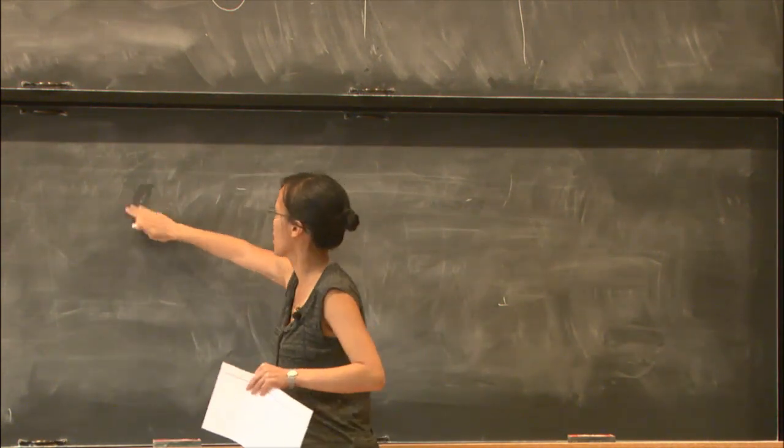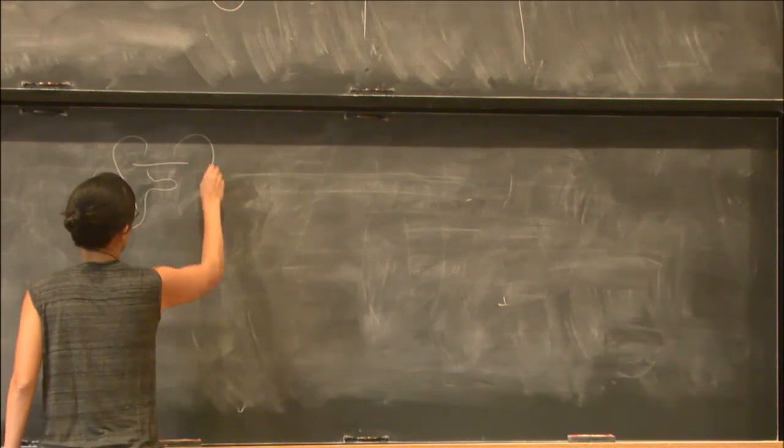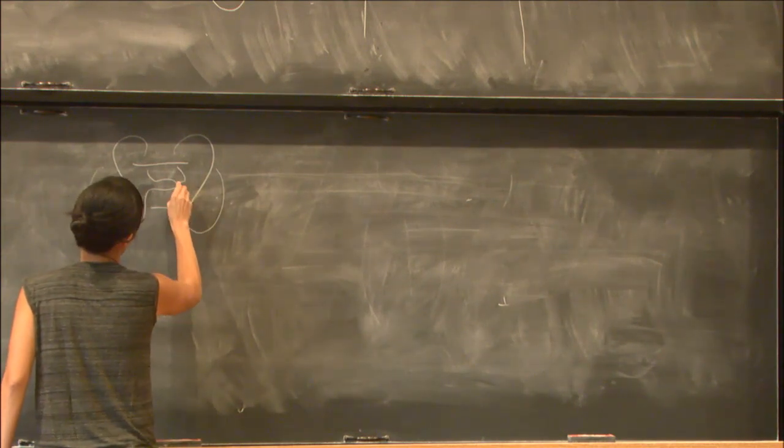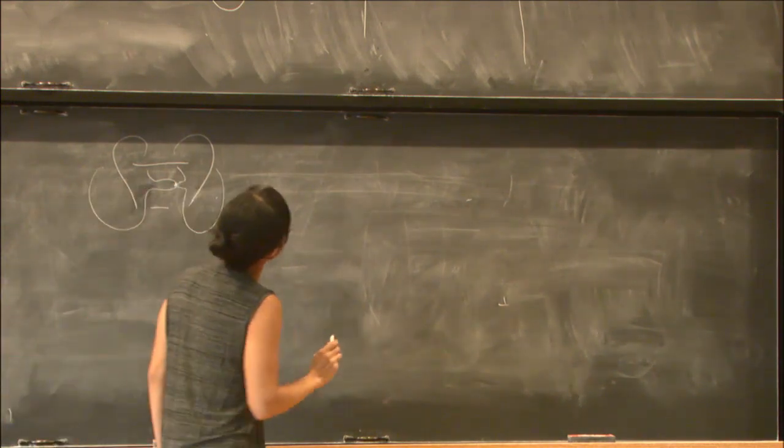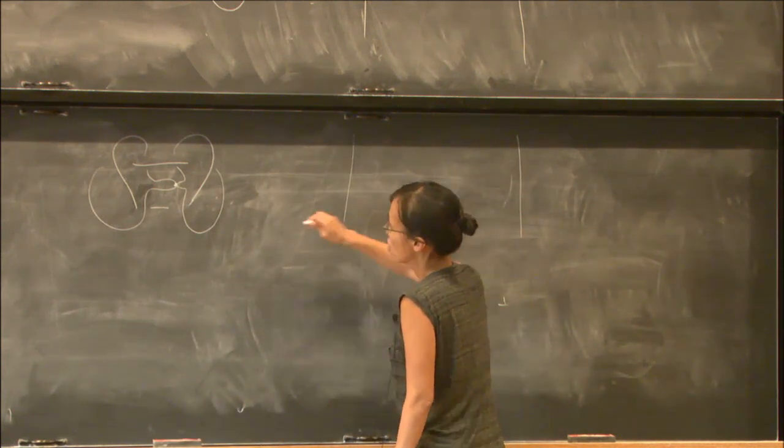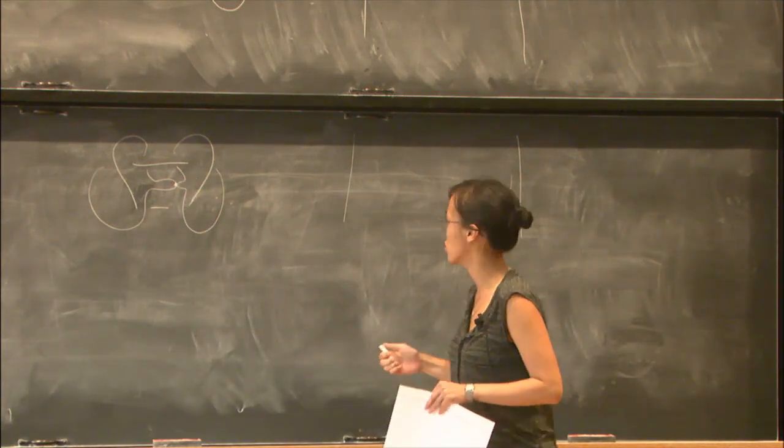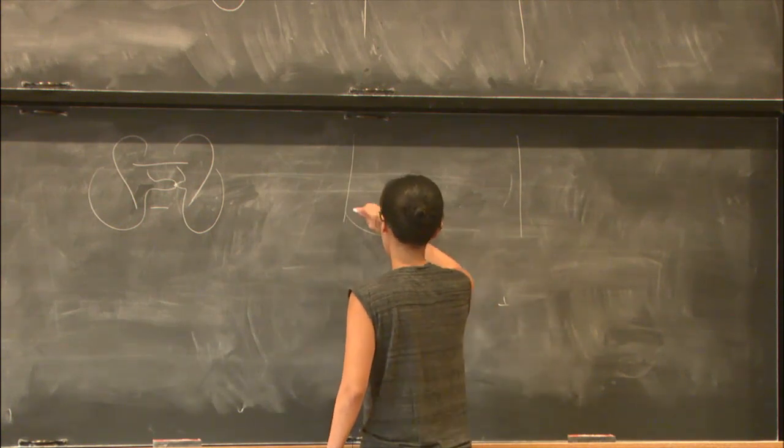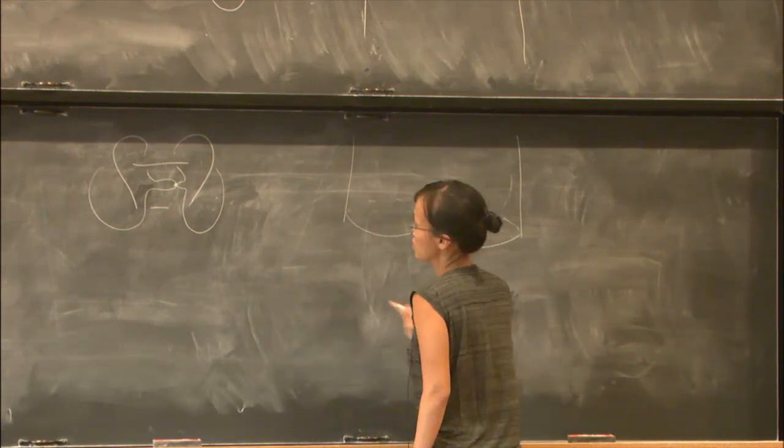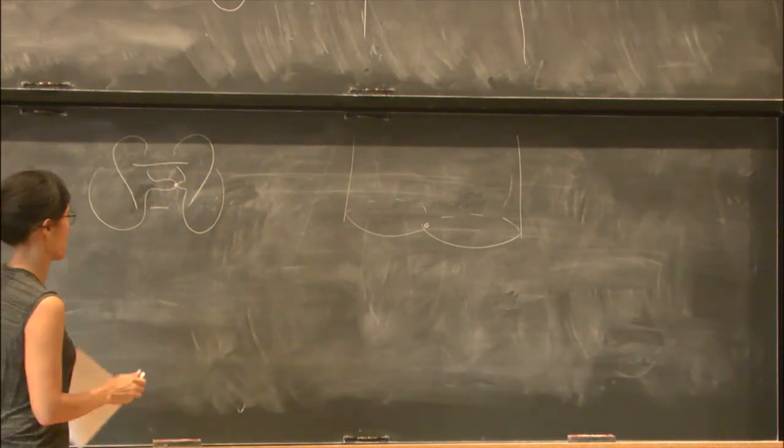Then what's going to happen next is where we performed the isotopy—those two points are going to come together. In terms of the surface, it's going to create a saddle point. Right here, topologically, this looks like a wedge of two circles. The cross-section of the surface is going to look like a wedge of two circles.